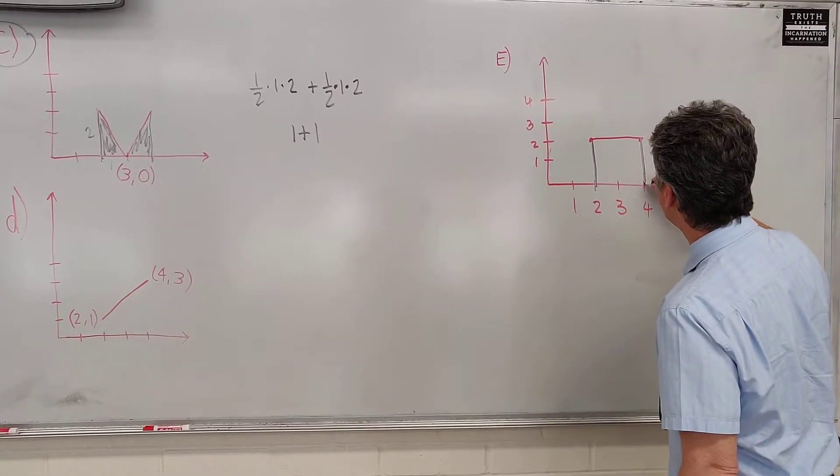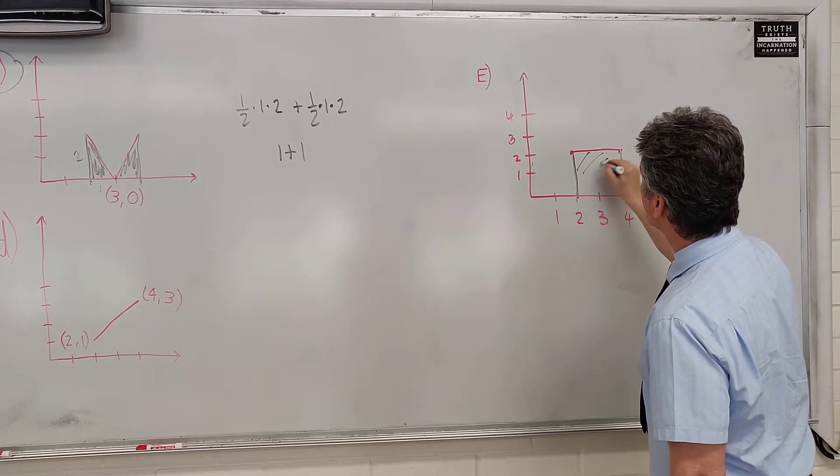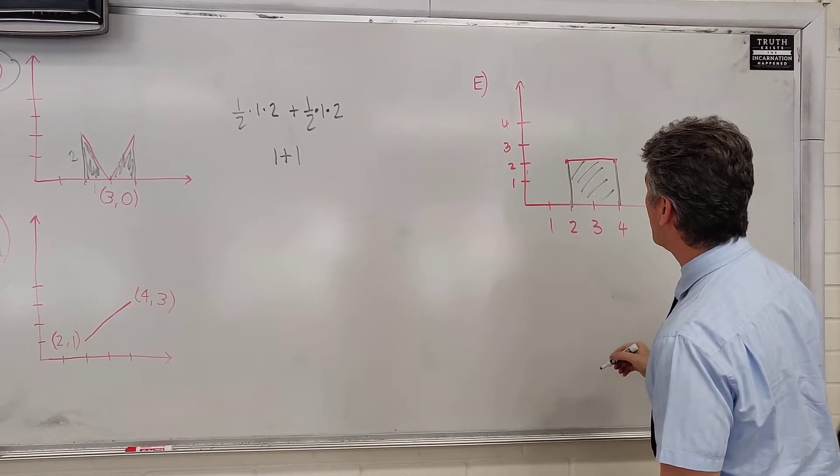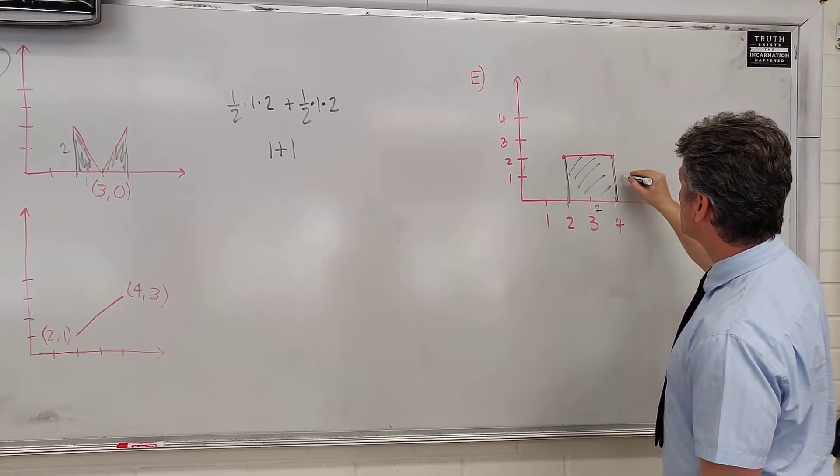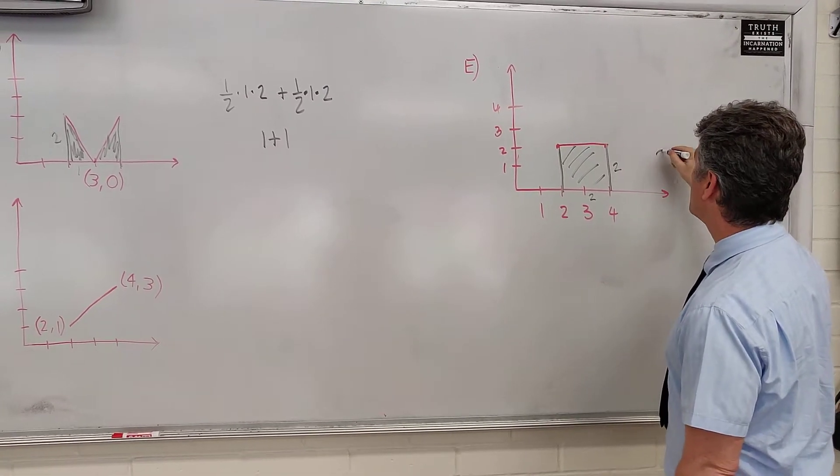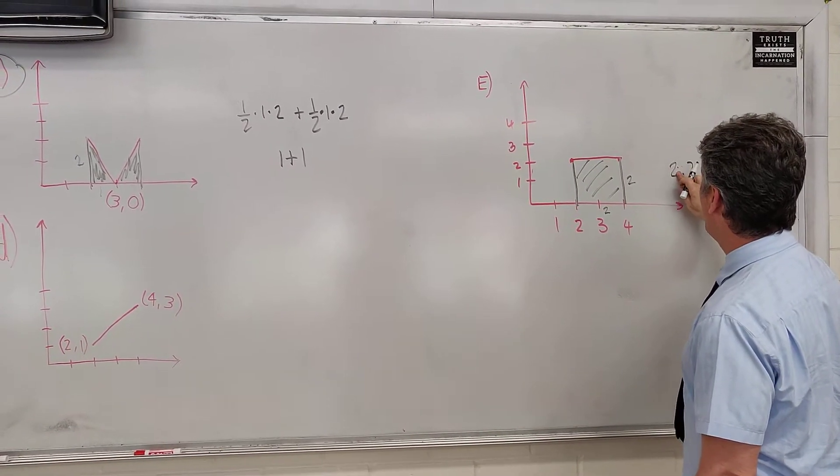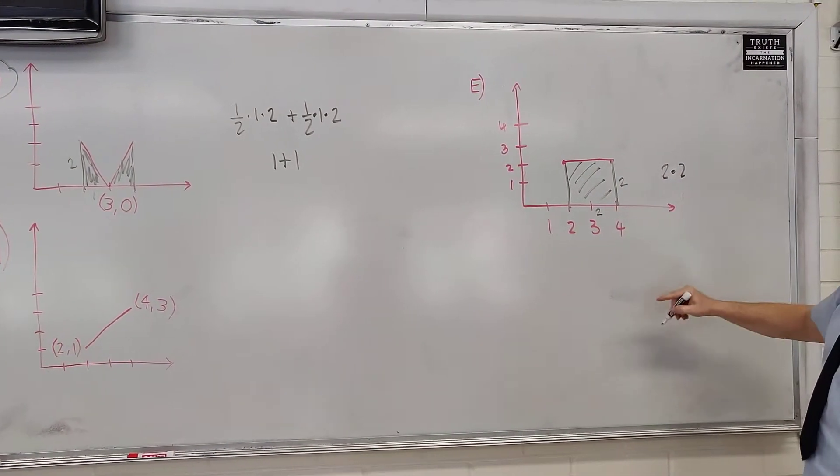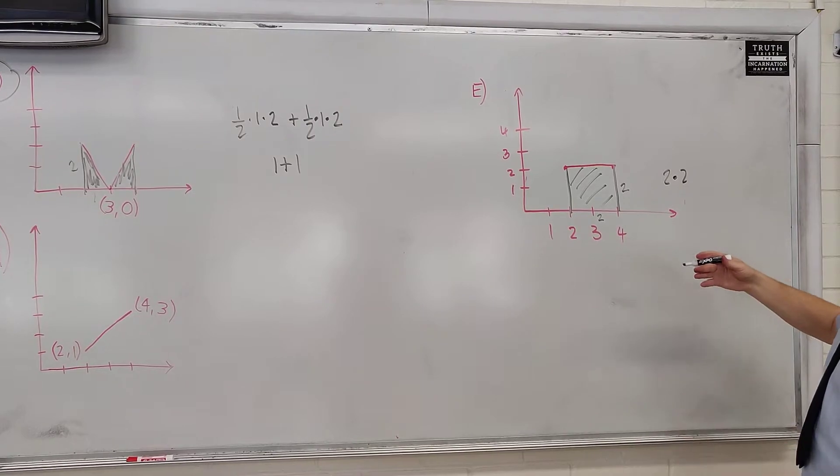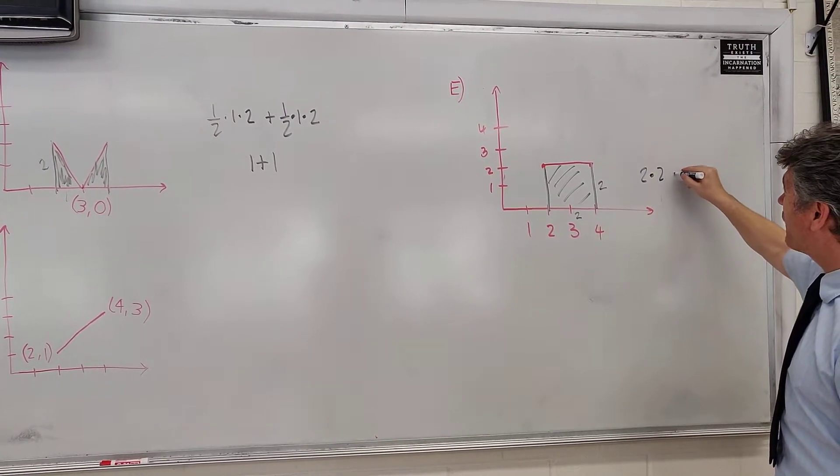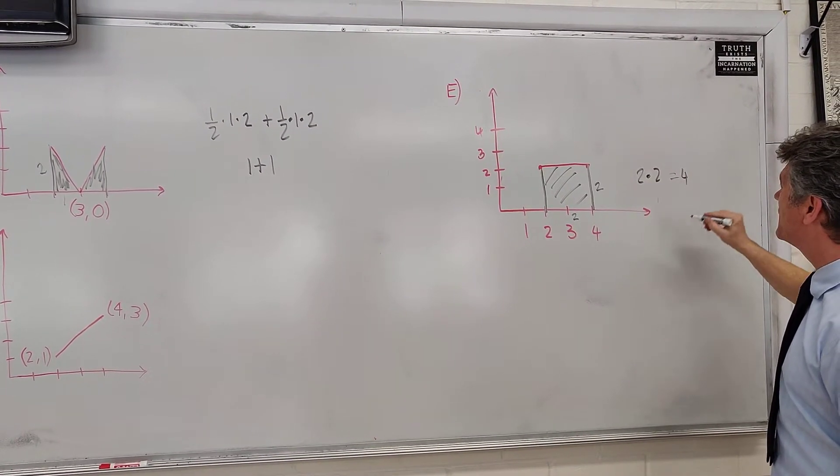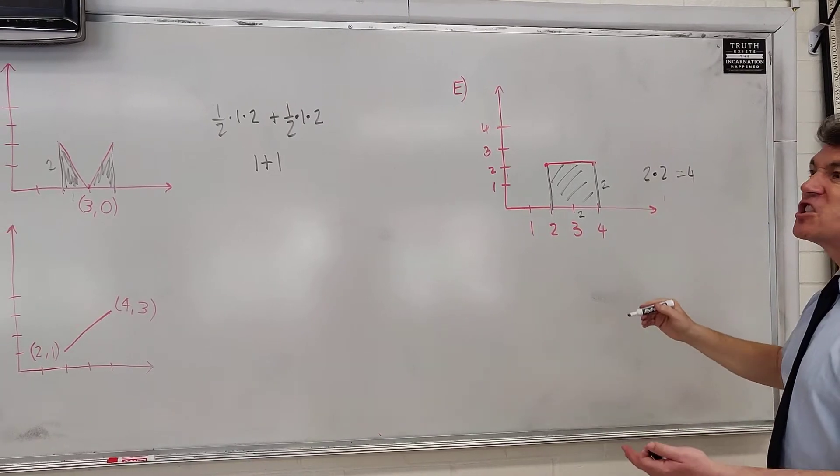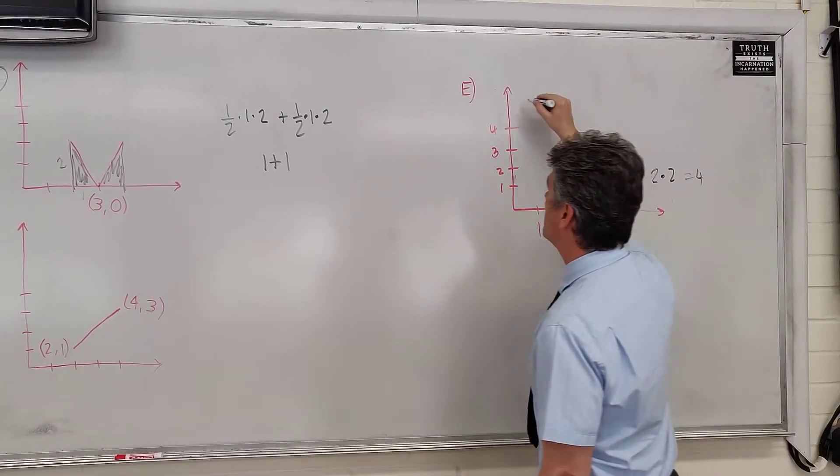For choice E, what you manage to do is draw a square. The base of the square is 2, the height of the square is 2. 2 times 2. As you can see, the people writing the test have a good sense of humor. One question asked you to find 1 plus 1, and another one asked you to find 2 times 2, which is 4, which is definitely not 2. So it's not choice E.